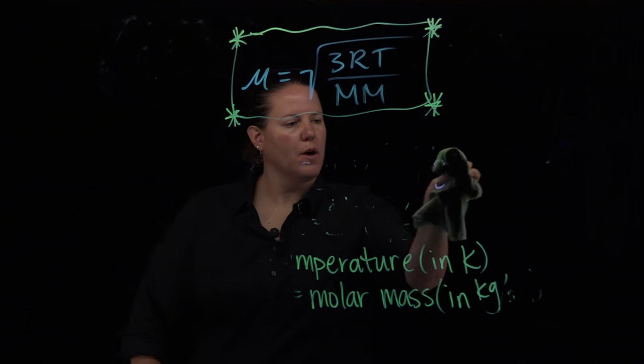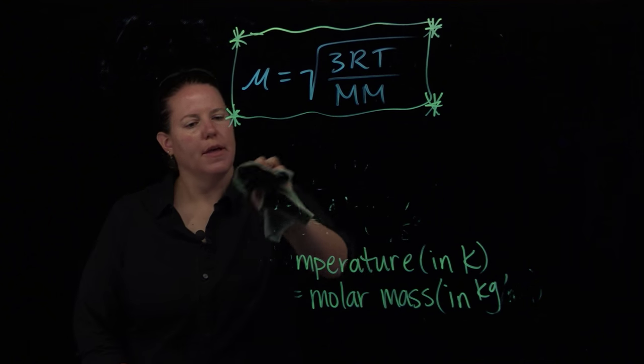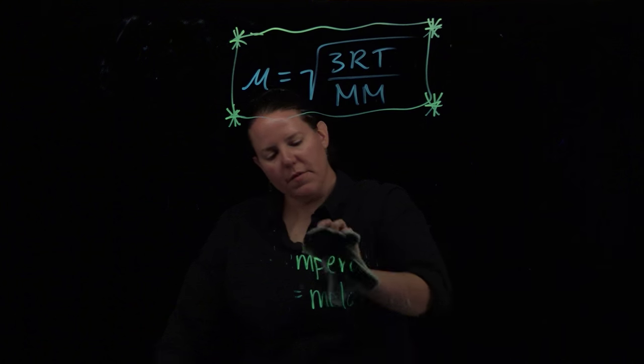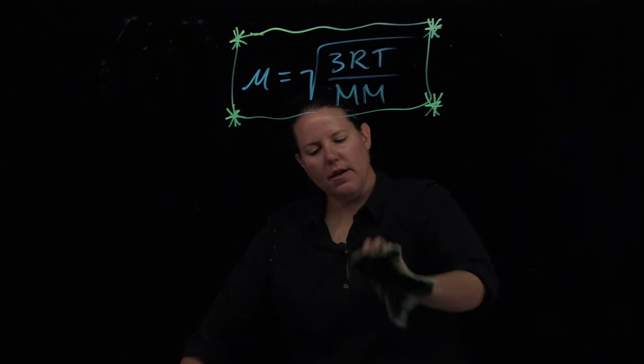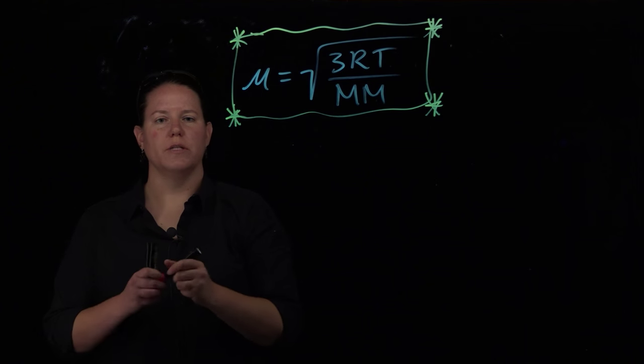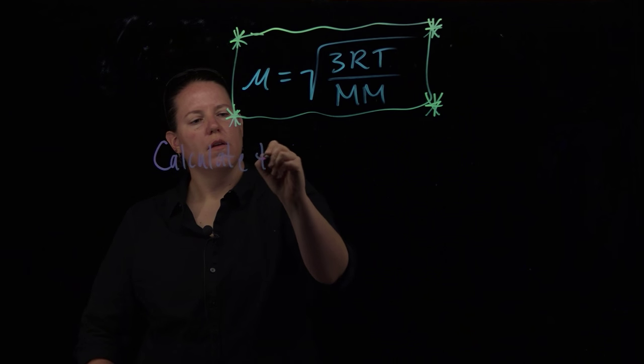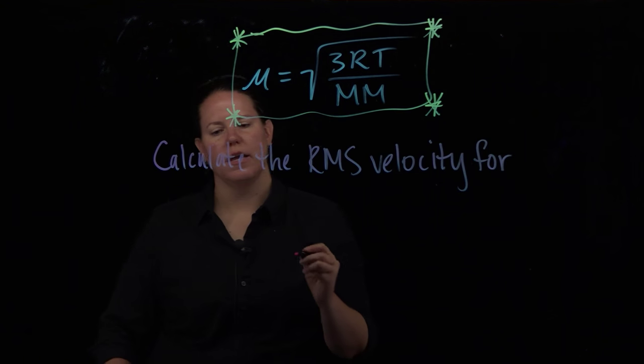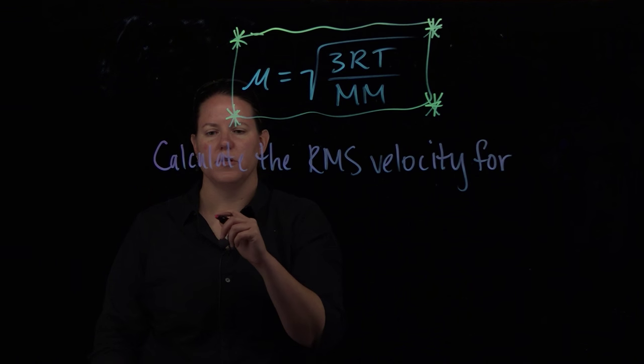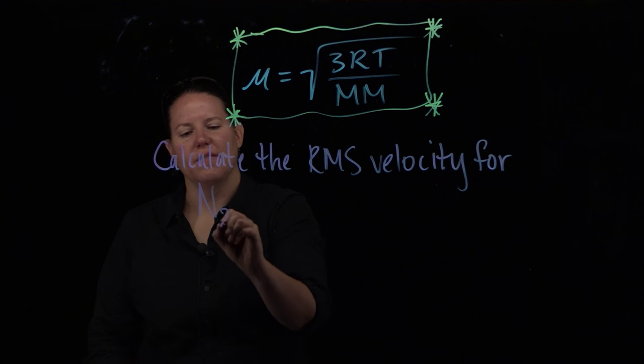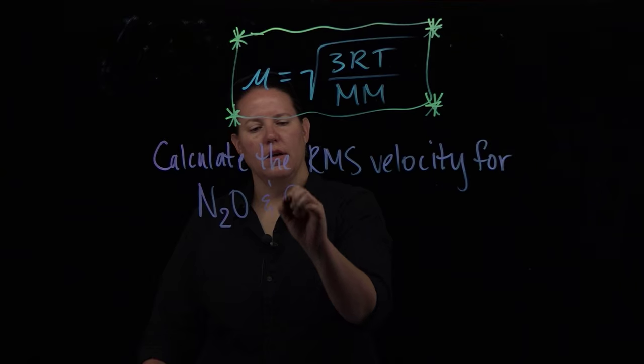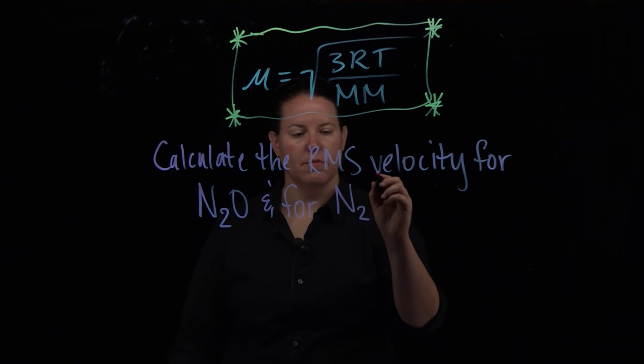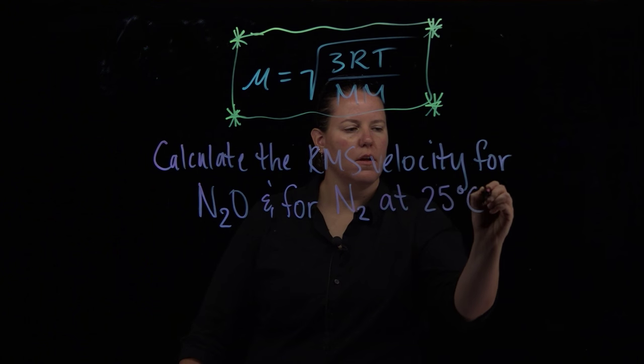We're going to do a problem that has two parts, because as we know, chemistry math problems like to be multi-parts. We're going to calculate the root mean square velocity for a couple of gaseous particles. Calculate the root mean square velocity for one of my favorite molecules, which is dinitrogen monoxide, otherwise known as nitrous oxide. I like it because it's laughing gas. And for nitrogen, which nitrogen we know naturally comes in twos. So that'll be nitrogen versus nitrous oxide. Sounds like fun. And we need a temperature here. So let's say it's at 25 degrees Celsius.